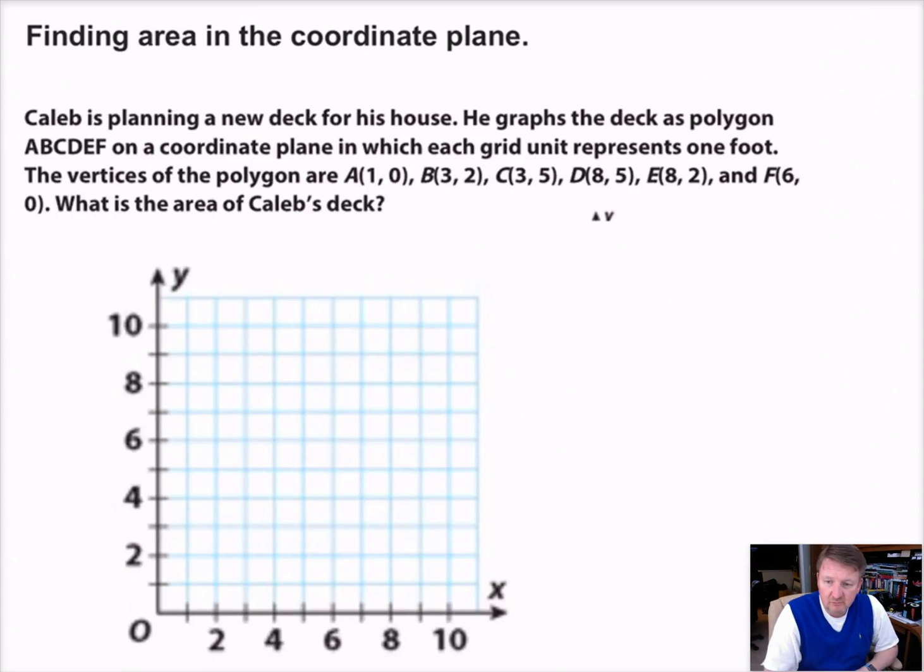We can also find the area of a shape using the coordinate plane. So here in this problem, it says that Caleb is planning a new deck for his house. He graphs the deck as a polygon, ABCDEF, on a coordinate plane, in which each grid unit represents one foot. The vertices of the polygon are at these points here, and it says what is the area of the deck. So the same thing. So we just need to go ahead and plot it. So point A, we'll use red for this. Point A is at 1, 0. So 1, 0 is point A. B is at 3, 2. So 3 and then up to 2 is B. That's point B.